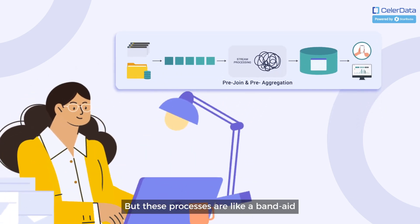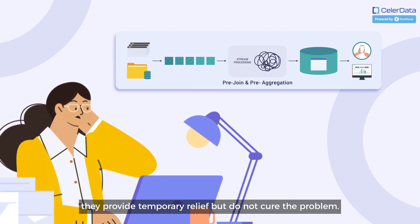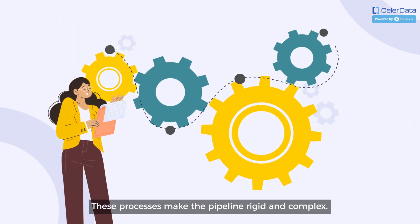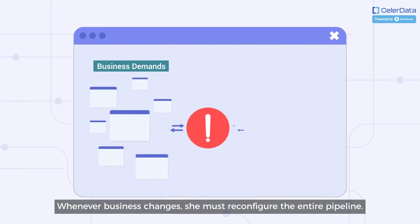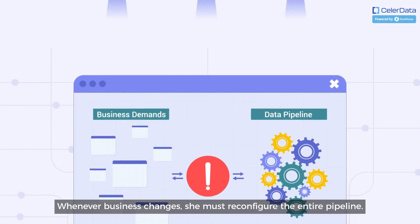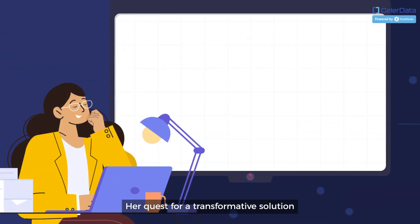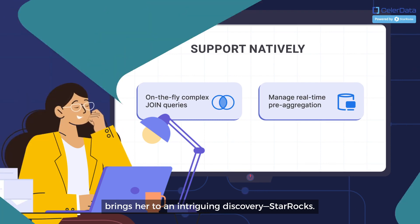But these processes are like a band-aid. They provide temporary relief but do not cure the problem. These processes make the pipeline rigid and complex. Whenever business changes, she must reconfigure the entire pipeline. Jane dreams of a simpler way. Her quest for a transformative solution brings her to an intriguing discovery: StarRocks.